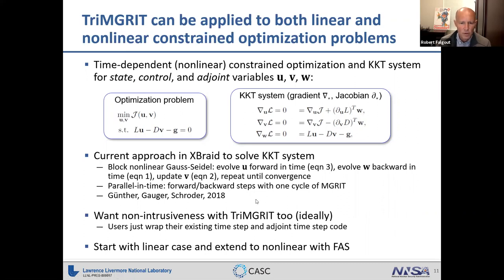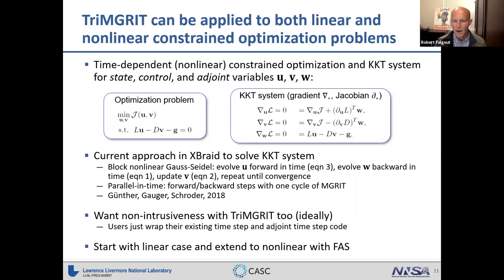We already have an approach in XBraid for solving this system, developed by Stephanie Gunter, Nicholas Galgar, and Jacob Schroeder. It's an approximate block nonlinear Gauss-Seidel method: evolve the state forward in time, evolve the adjoint backward in time, then update the controls — repeating until convergence. Parallelism is achieved by substituting the forward and backward evolution with one cycle of multigrid reduction in time or another parallel-in-time method.